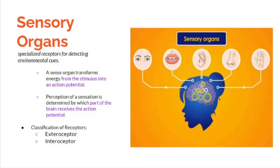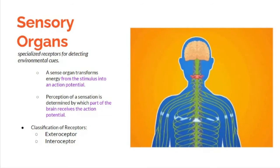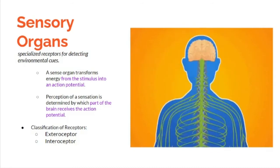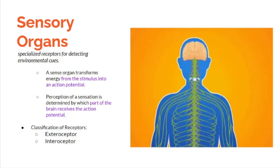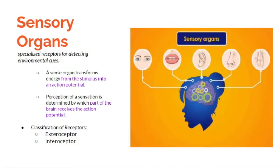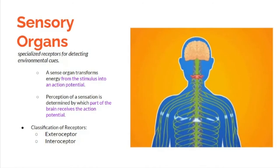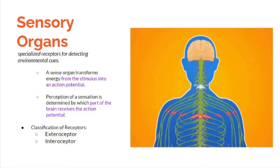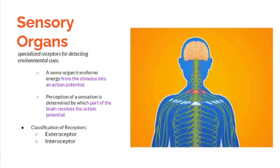Sensory organs are specialized receptors for detecting environmental cues. A sense organ transforms energy from the stimulus into an action potential. Perception of a sensation is determined by which part of the brain receives the action potential.